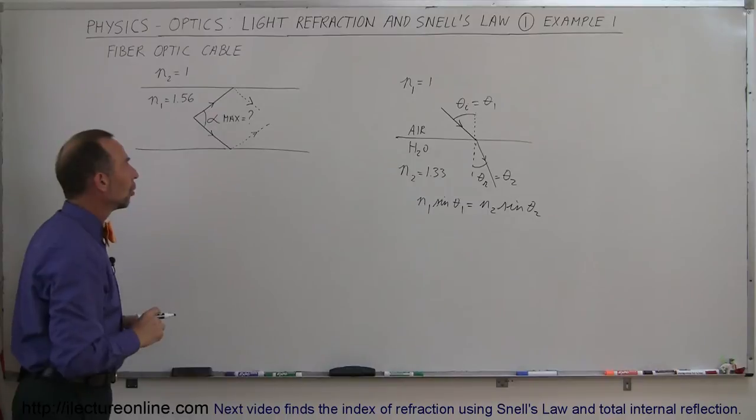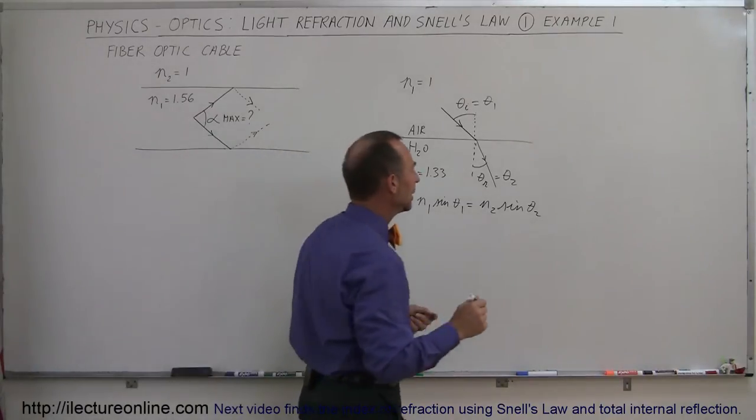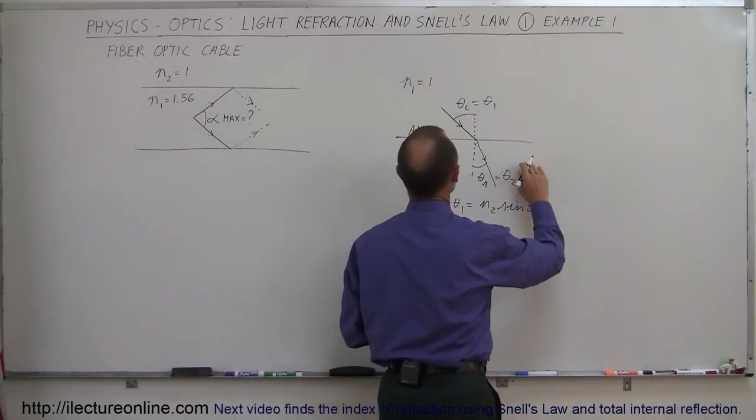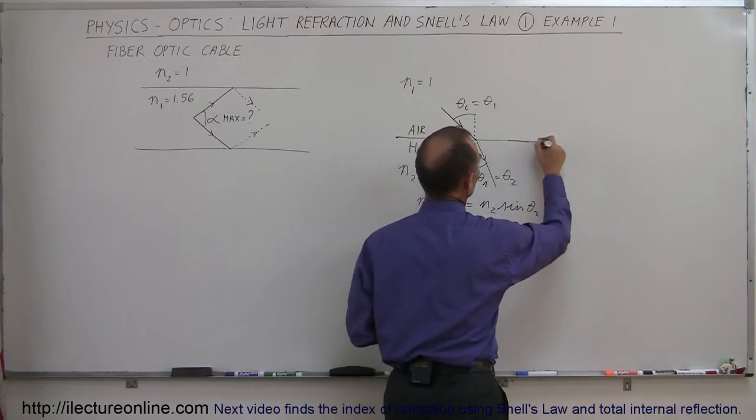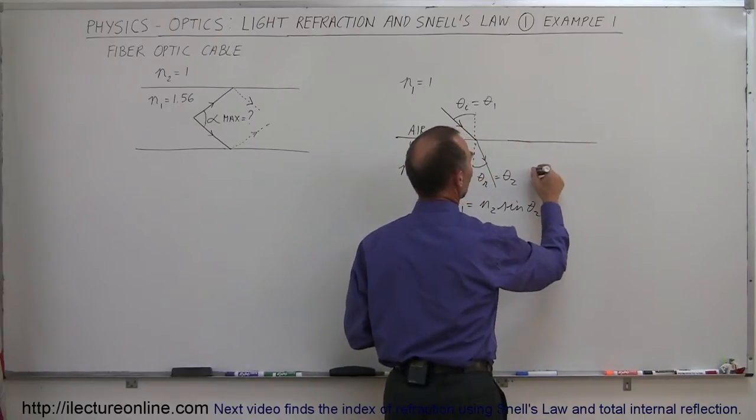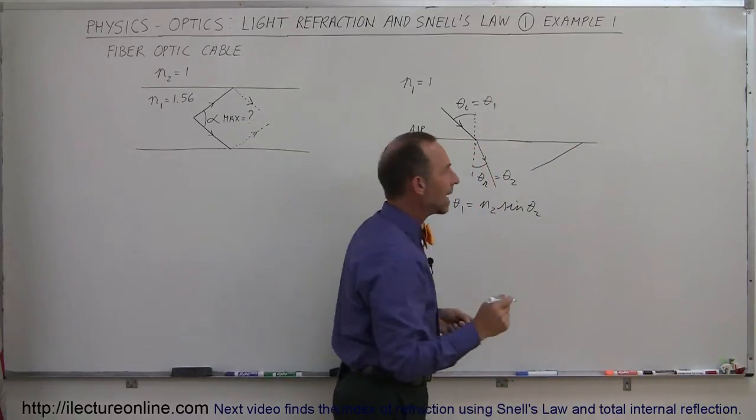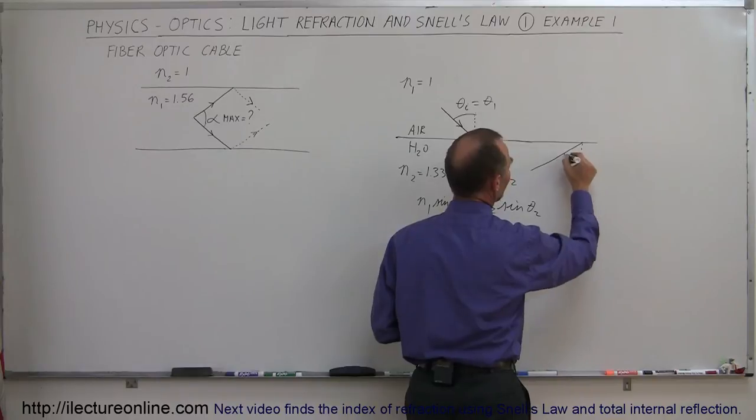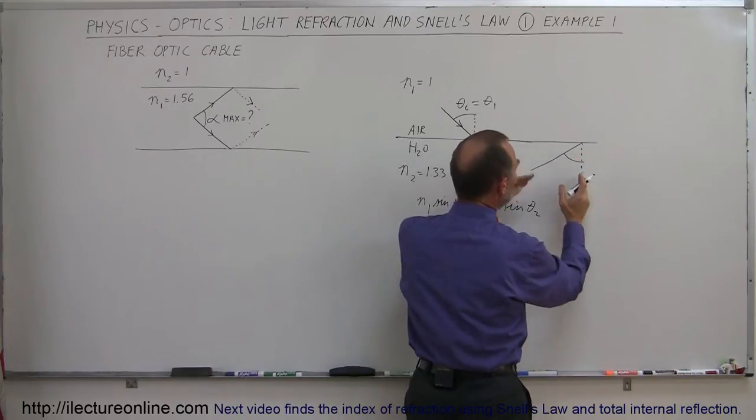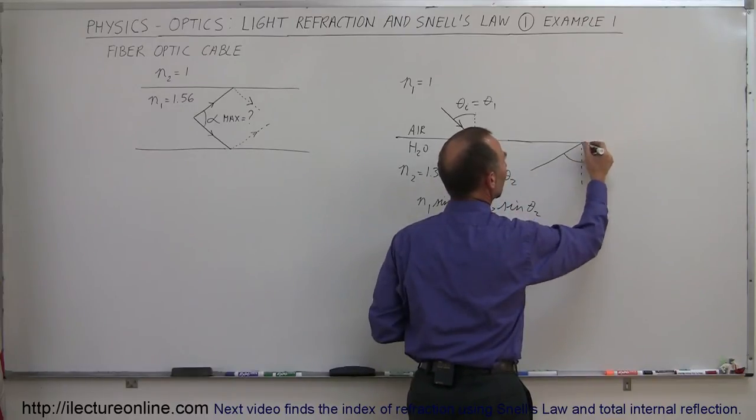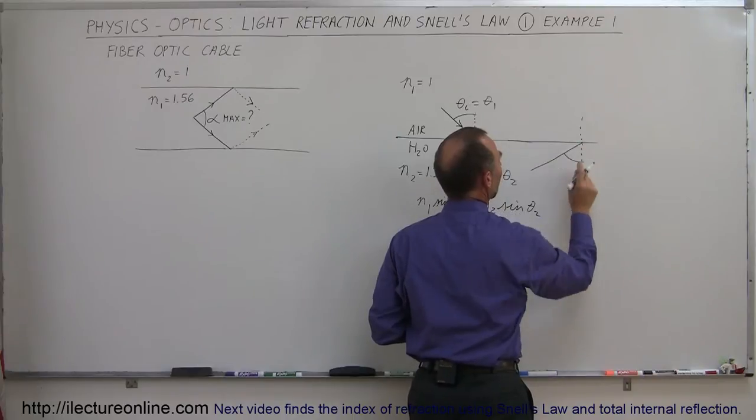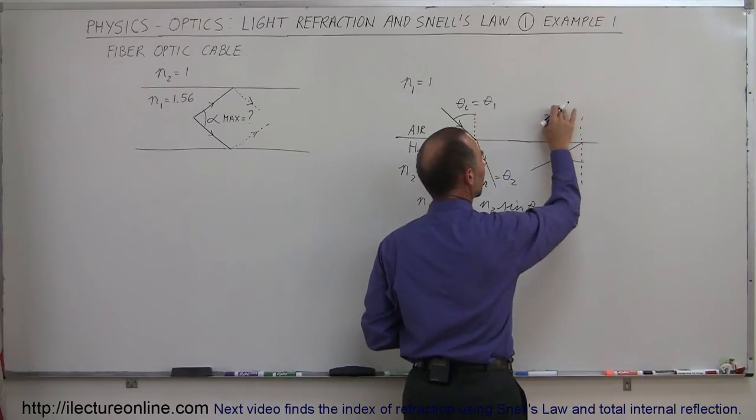We also find that when a ray goes from a larger index of refraction to a smaller index of refraction, let's say somebody is underneath the water, and shines a beam of light towards the boundary, if the angle of incidence, this angle right here, if this angle is too large, instead of crossing the boundary,